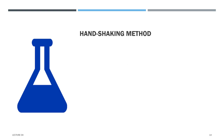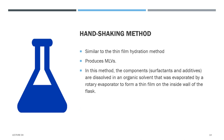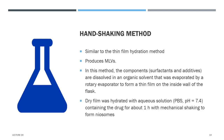The handshaking method is very similar to the thin film hydration method and produces multilamellar vesicles. Component surfactants and additives are dissolved in an organic solvent and evaporated using a rotary evaporator to form a thin film on the inside wall of the flask. Dry films are then hydrated with phosphate buffer saline at pH 7.4 containing the drug for about one hour with mechanical shaking to form neosomes.